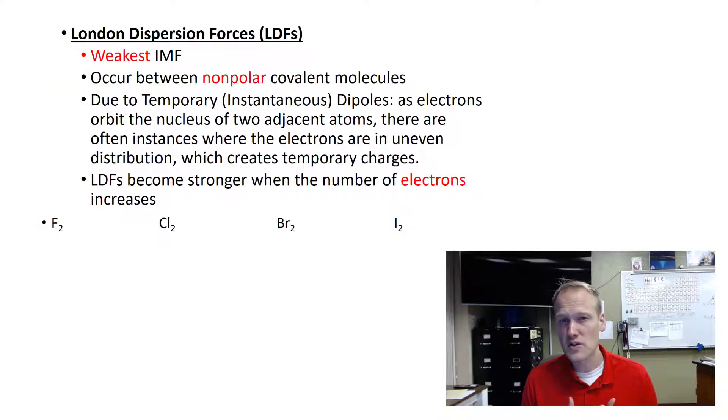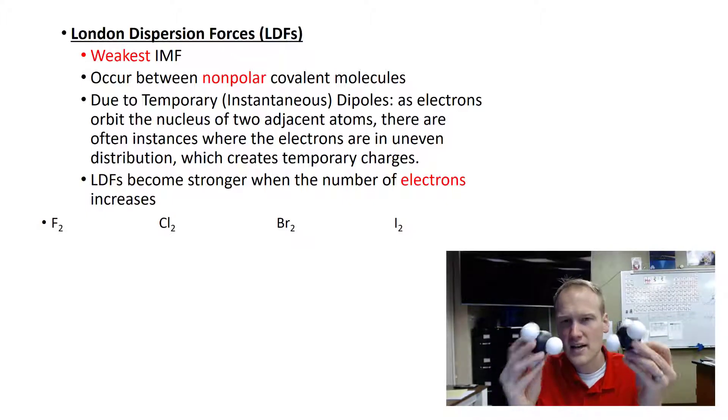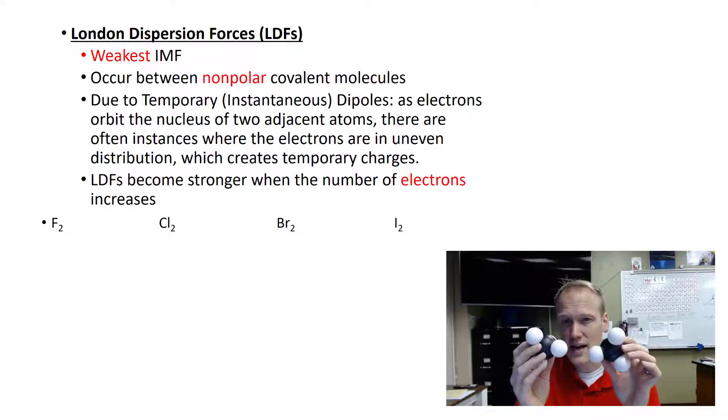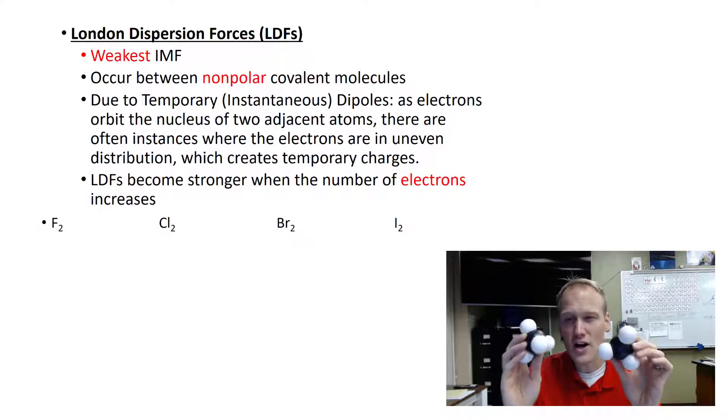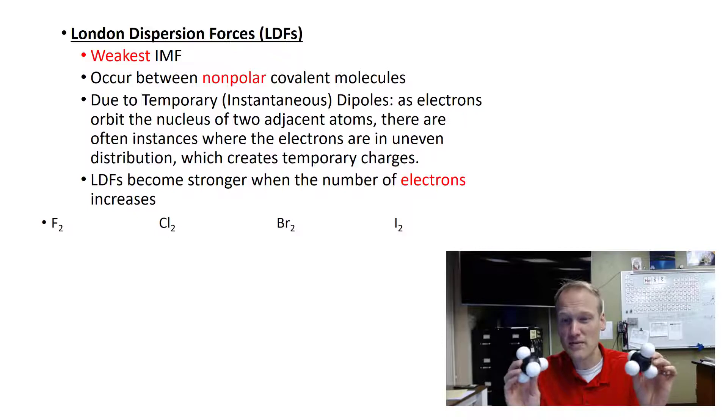The first intermolecular force we're going to talk about is London dispersion forces. These are the weakest intermolecular forces, and it's because they occur between non-polar molecules. We've talked about methane, and we know that methane is non-polar. So because neither one of these have a positive and negative end, they would theoretically not be attracted to each other. But we know that the electrons that are holding these bonds together, they're not stationary. They're moving around at the speed of light really fast around these molecules. And because of that electron movement,